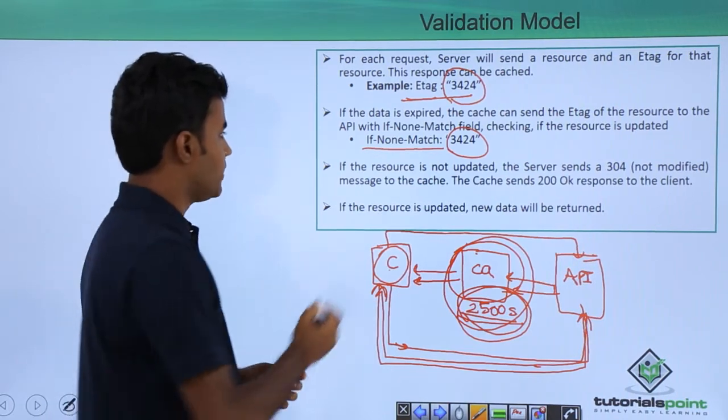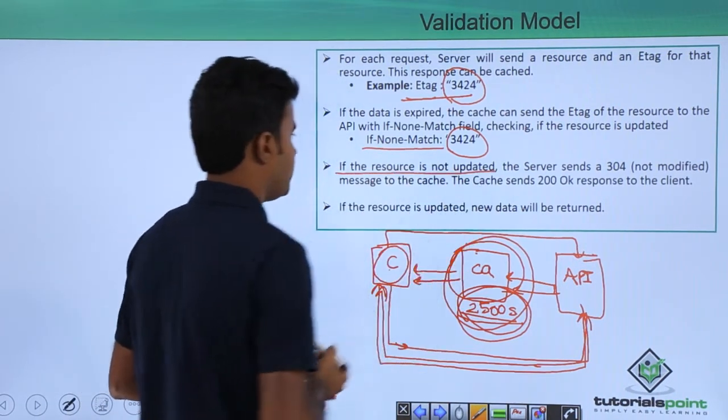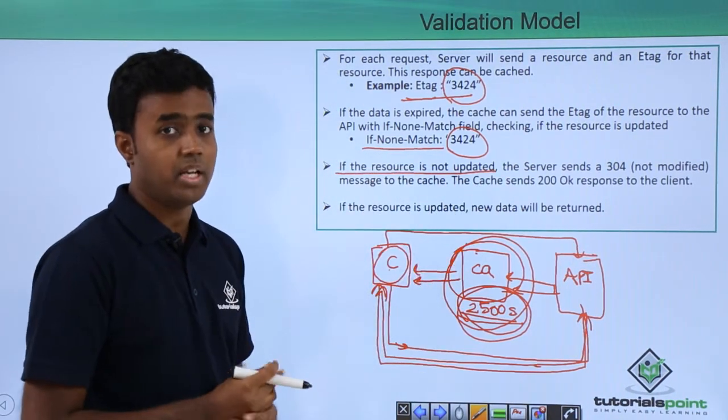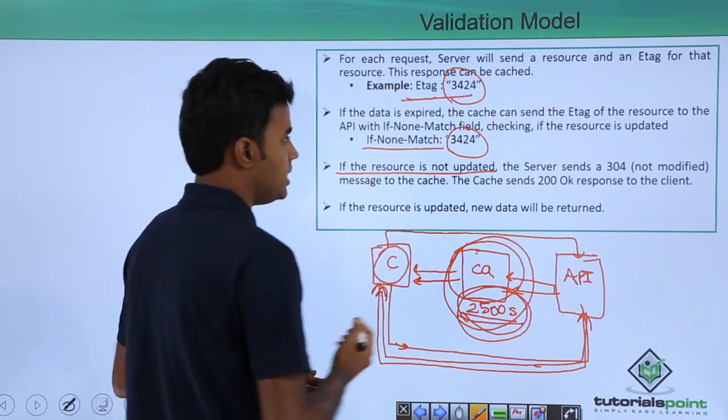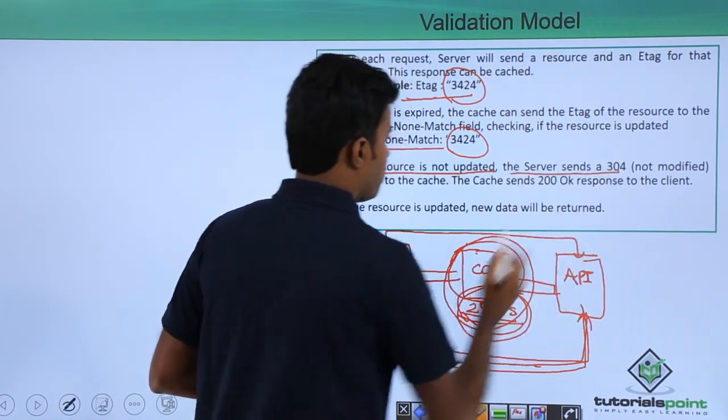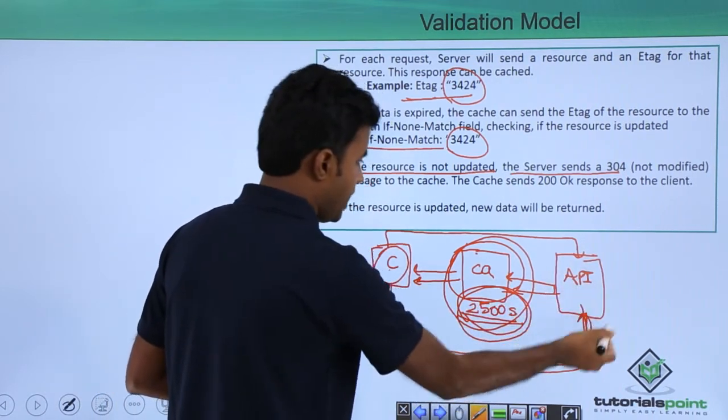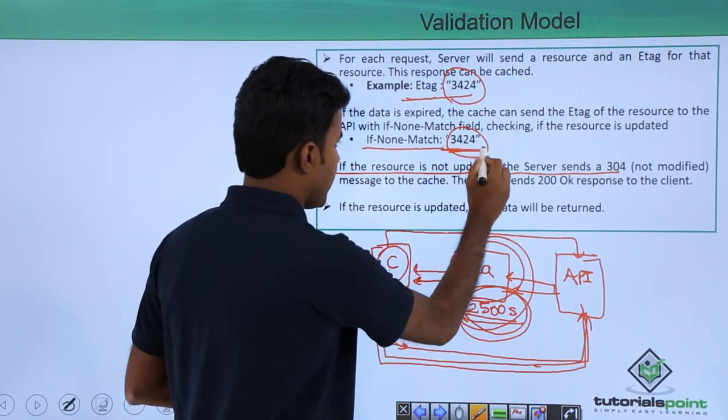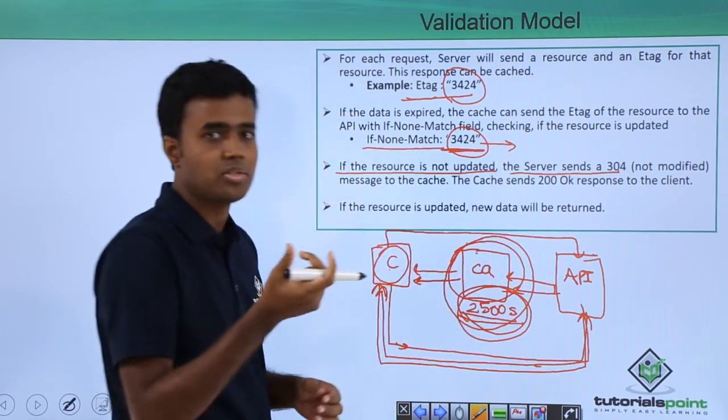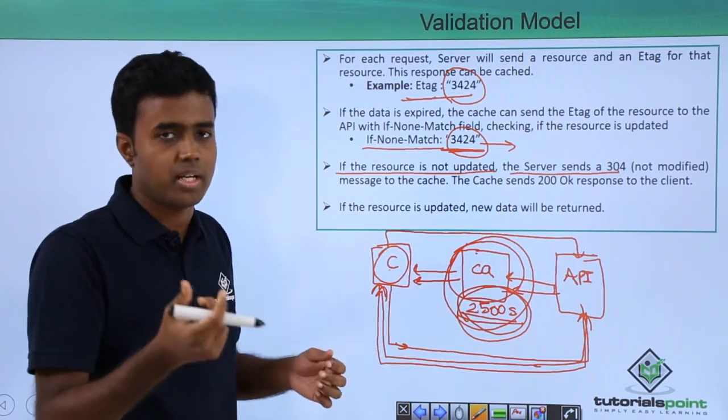If the request is not updated, or rather the resource is not updated, or if the resource is same, the server sends a 304 not modified message to the cache. If the resource is same for this particular e-tag. So this e-tag represents a particular resource, it could be a product resource or customer resource.